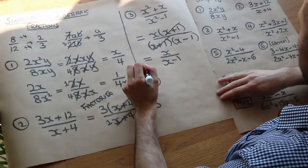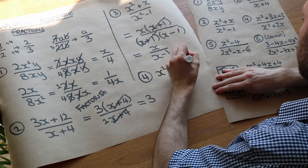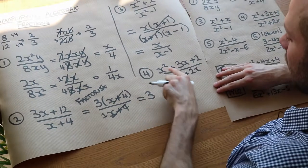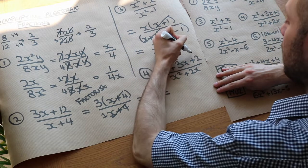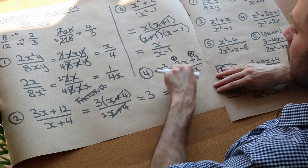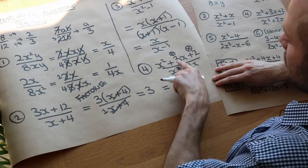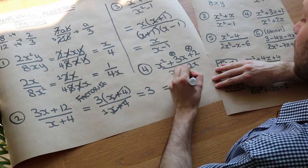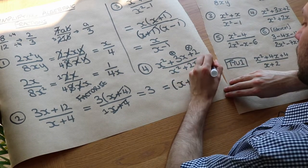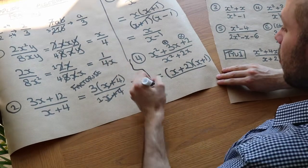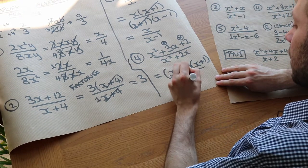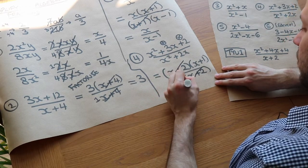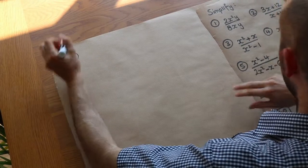Next question: we've got x squared plus 3x plus 2 over x squared plus 2x. Again we factorise top and bottom. We need two numbers that add to give 3 and multiply to give 2; those are 2 and 1, so the top factorises as (x plus 2)(x plus 1). The bottom has a common factor of x, giving x(x plus 2). We can then divide top and bottom by (x plus 2) and we're left with (x plus 1) over x.